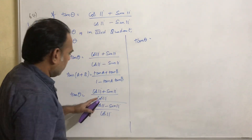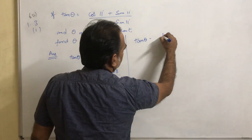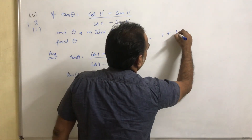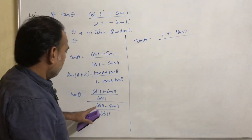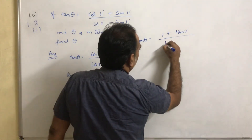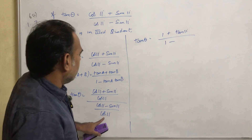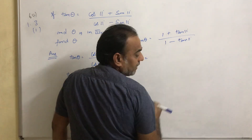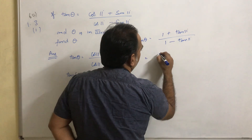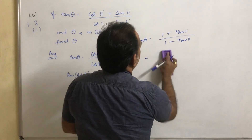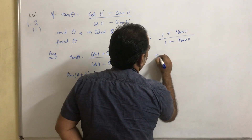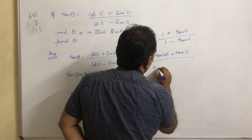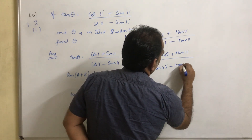Tan theta equals cos 11 divided by cos 11, which is 1, plus sin 11 divided by cos 11, which is tan 11. The denominator becomes 1 minus tan 11. Now, 1 can be written as tan 45, since tan 45 is 1. So we substitute tan 45 in place of 1: tan 45 plus tan 11, over 1 minus tan 11.